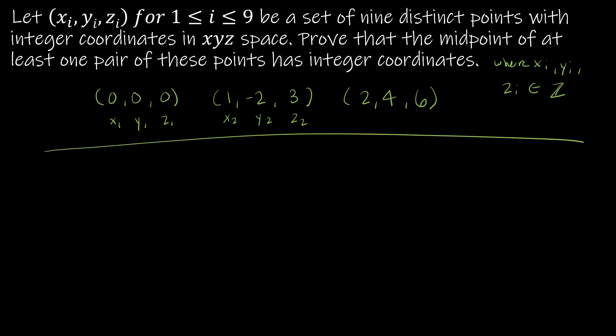We want to prove that the midpoint of at least one pair of these points has integer coordinates. So we've talked about what all of this mess means. And now we need to talk about what does it mean to be a midpoint. Hopefully you recall what it means to be a midpoint. But if you don't, let's just remind ourselves, how do you find the midpoint of an ordered pair, or in this case, an ordered triple? To find the midpoint, we need to take the x values of the two points and average them, and the y values of the two points and average them, and the z values of the two points and average them. That's how we find a midpoint.